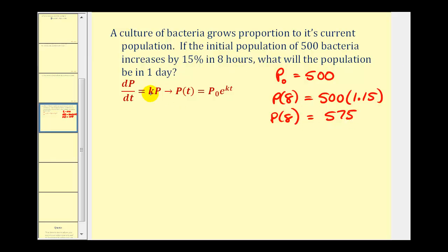Now we need to be careful because k is not equal to 15%, because t represents the time in hours. So k represents the hourly growth rate, not the growth rate over eight hours. What we're going to do now is use this information to find the hourly growth rate, and then we can answer the question of what the population will be in one day, which is equal to 24 hours.